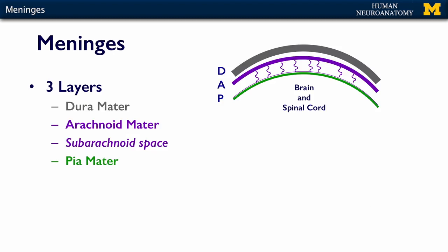So there are three layers. The outermost is the dura, labeled here with a D, and it's called the dura mater. Dura mater in Latin means, literally, tough mother. And it is the sturdiest of all three of the layers.